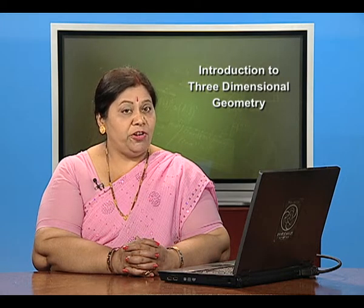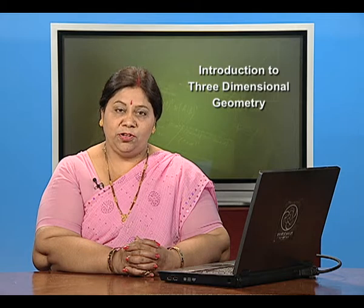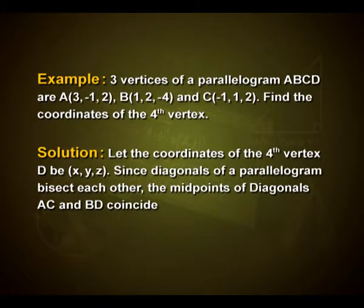Let us look into one more interesting example. Vertices of a parallelogram A, B, C, D are A(3, −1, 2), B(1, 2, −4), and C(−1, 1, 2). Find the coordinates of the fourth vertex D. Let D be (x, y, z).